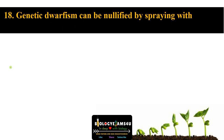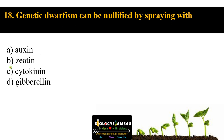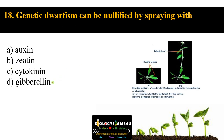Question number eighteen: genetic dwarfism can be nullified by spraying with which hormone? Option A auxin, option B zeatin, option C cytokinin, option D gibberellin. The answer is gibberellin. Gibberellin causes reversal of genetic dwarfism in rosette plants by inducing internodal elongation and rapid growth followed by flowering — often termed bolting.